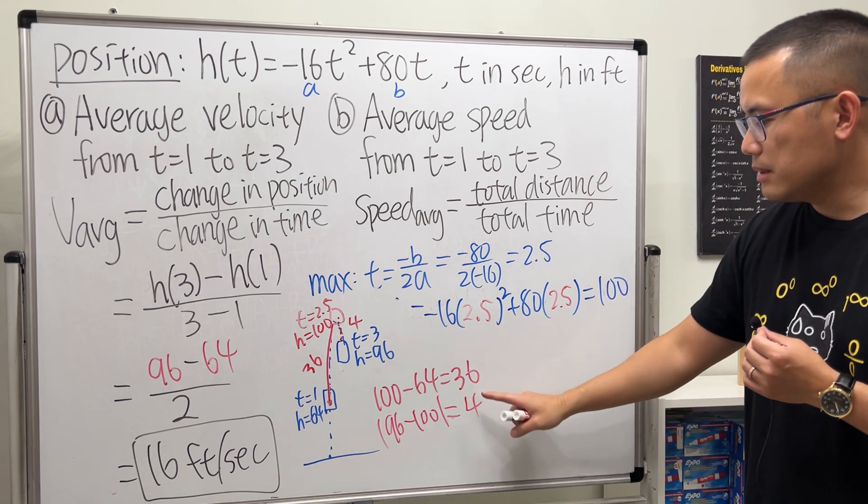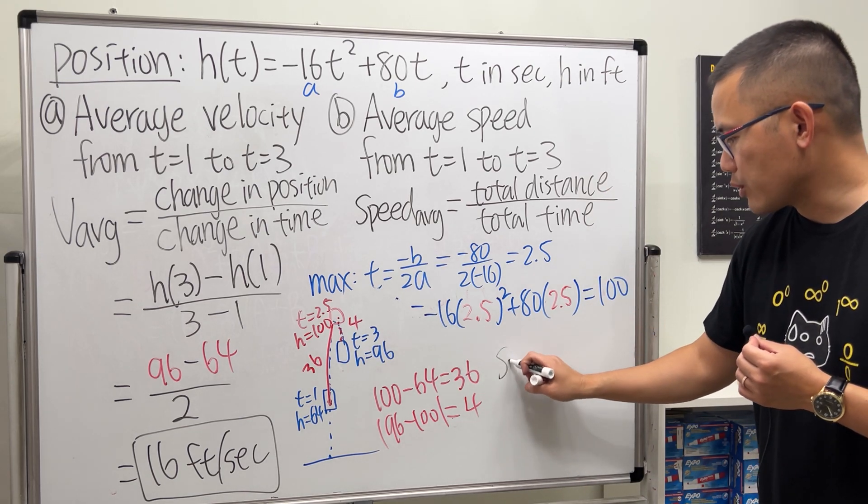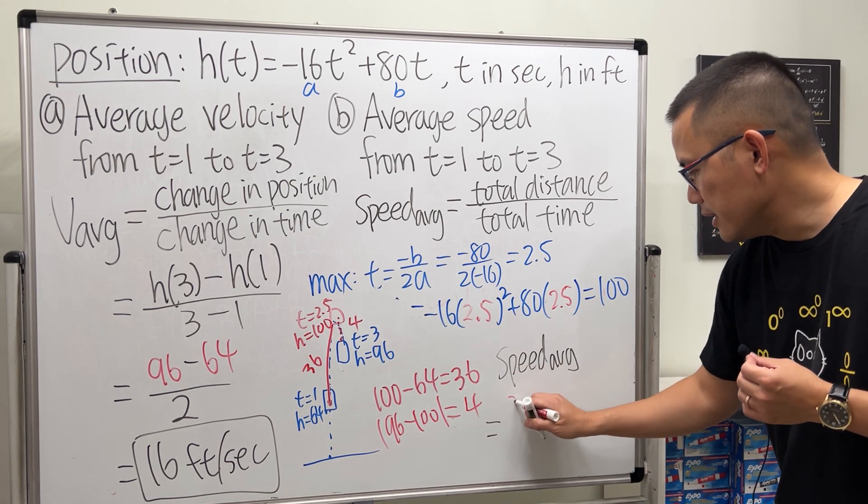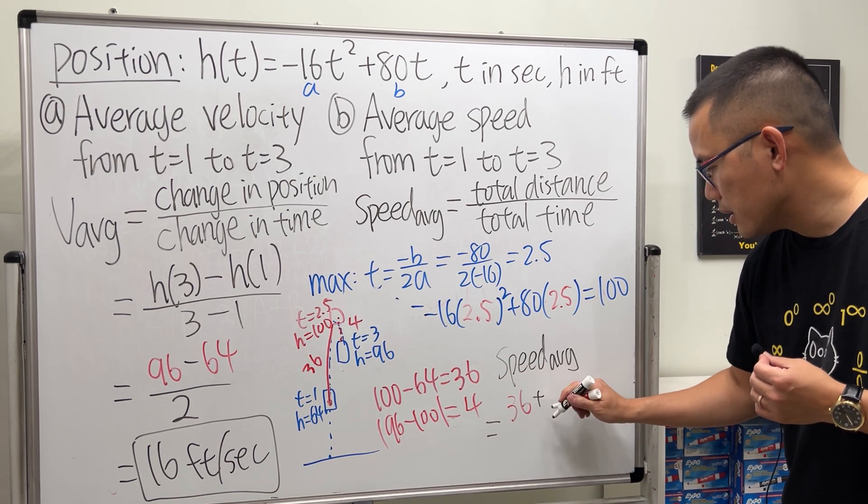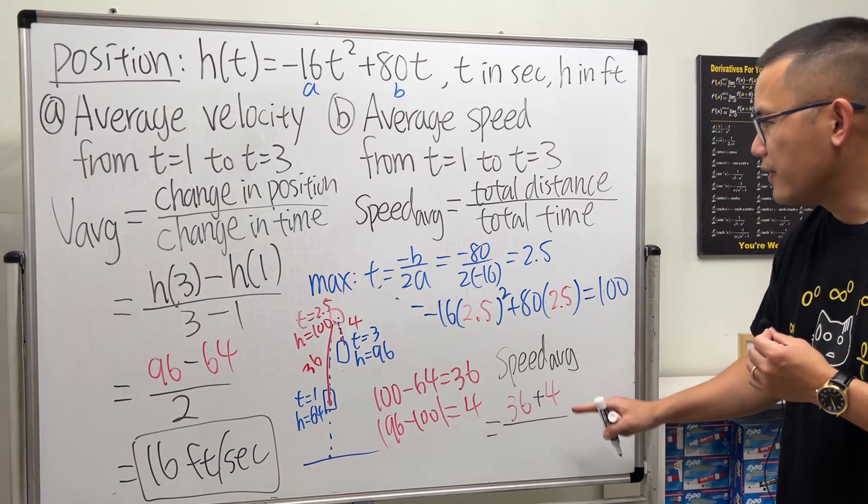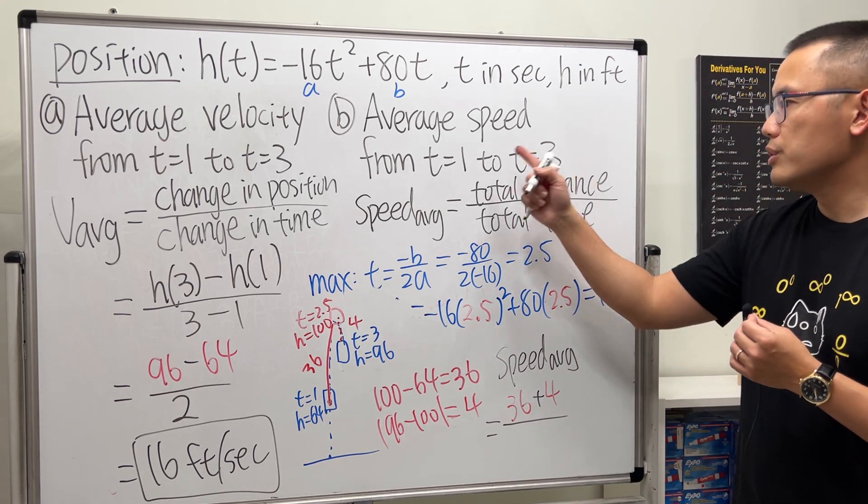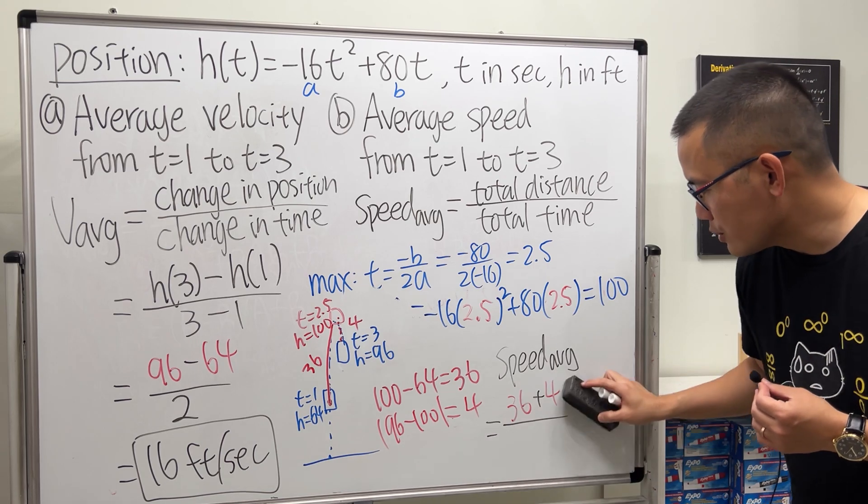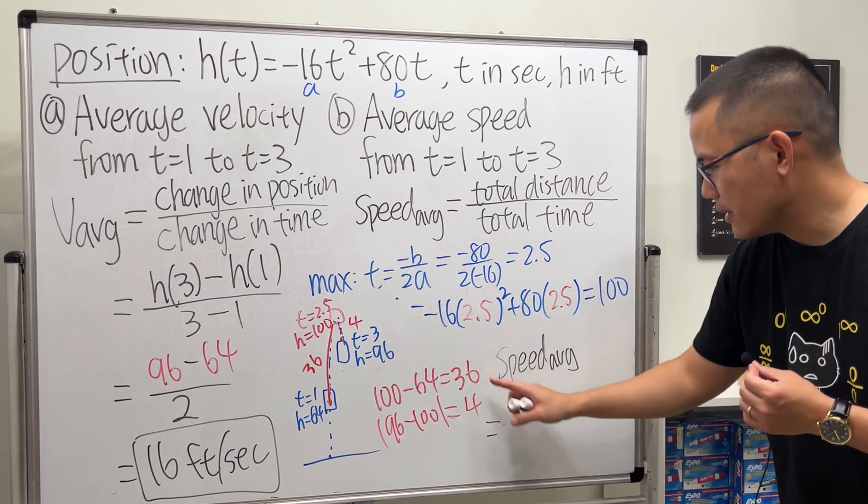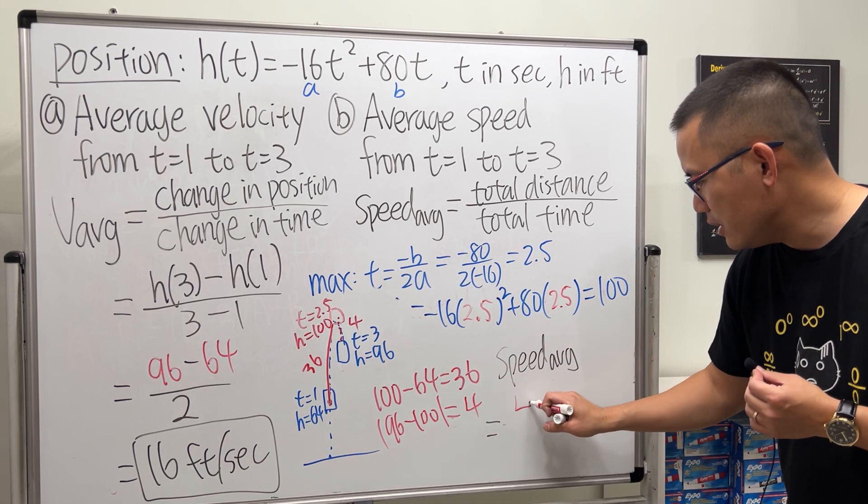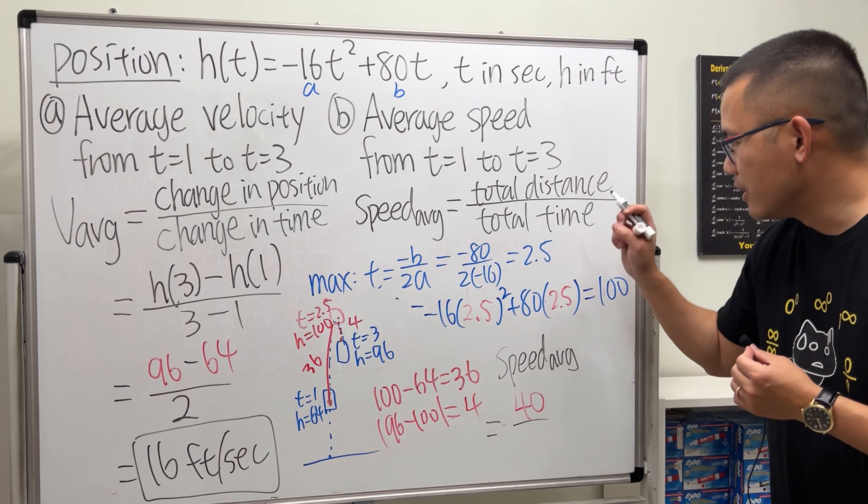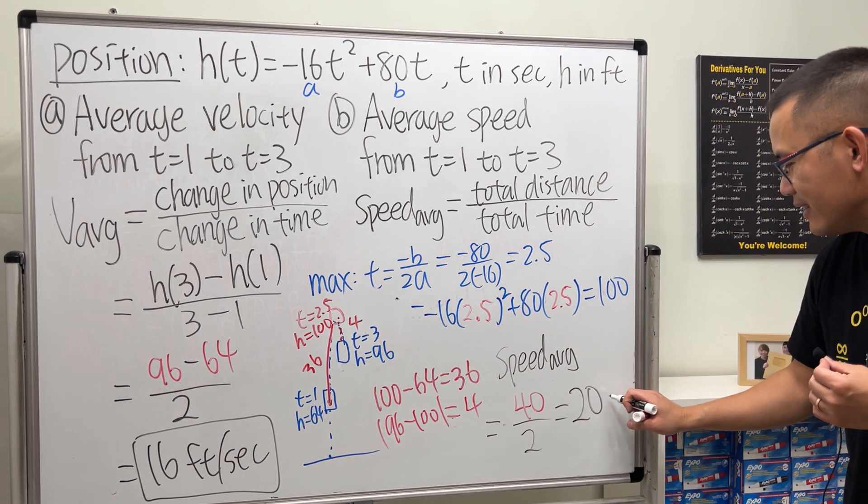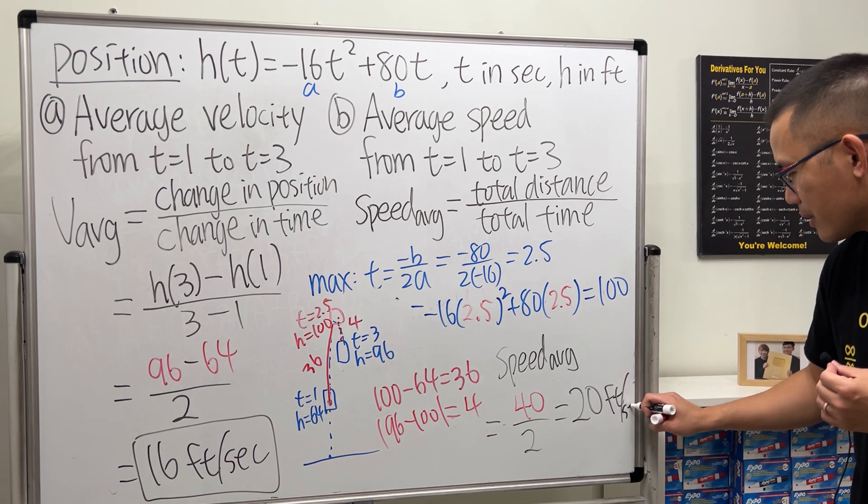So for the average speed between 1 to 3 seconds, the total distance is this plus that, so I'll just write this down right here real quick. We'll do 36 plus 4 which is 40, and then divide it by the total time that we need which is 3 minus 1, which is 2. Perhaps I'll just write it down like this because I'm about to run out of space. The total distance is 40 over the total time which is 2. Work that out we get 20, and of course this is feet per second.